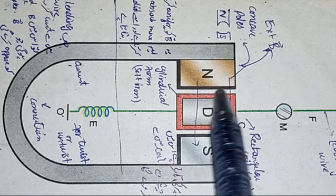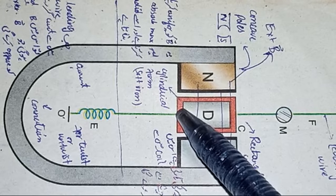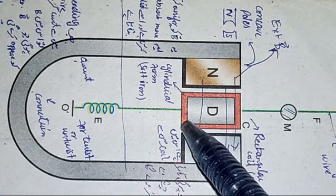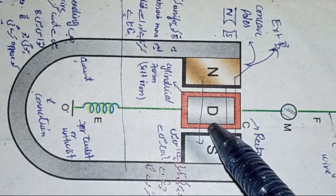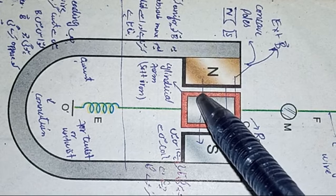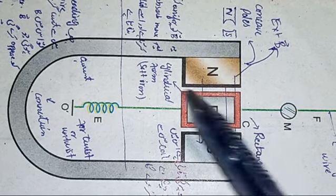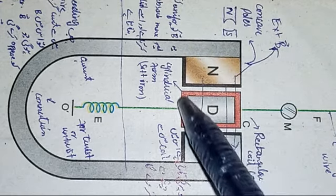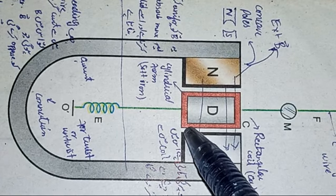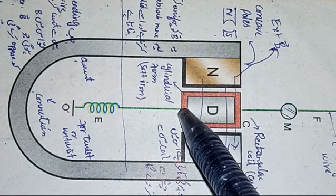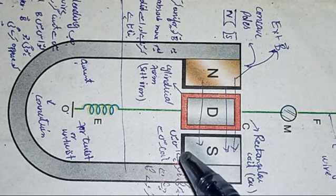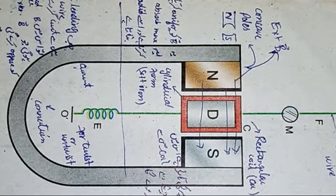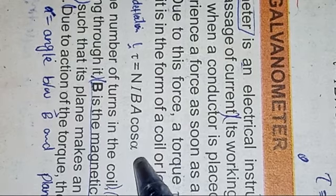This is the working of the galvanometer. When a current is passed through the coil, it is acted upon by a couple — on one side the force acts upward and on the other side downward. Due to this couple, the coil tends to rotate. This couple is known as the deflecting couple. Under the action of current in the presence of a magnetic field, the torque causes the rectangular coil to rotate, and this is known as the deflecting couple, given by τ = NIBA cos α.